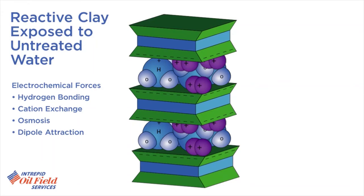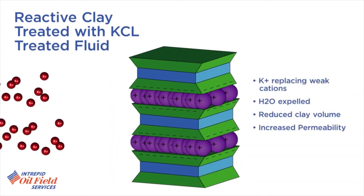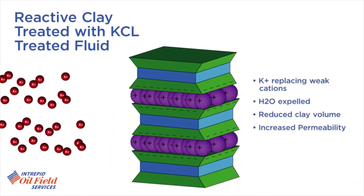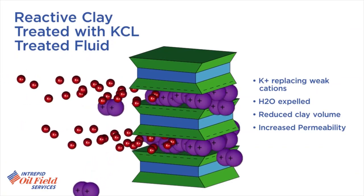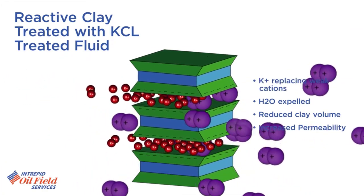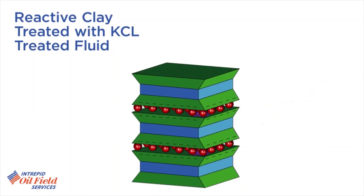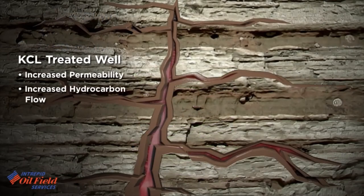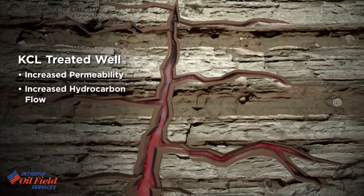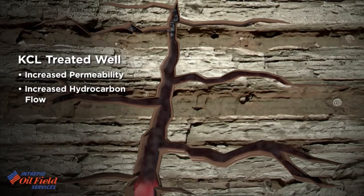When smectite plates are exposed to a KCL brine, the bonds from the initial water molecules already attached are broken. The K+ ions attach to the negatively charged clay surfaces, pull the platelets together, and in the process expel the water and shrink the clay. This shrinking increases permeability in the reservoir and ultimately improves IPs and flattens out decline curves, producing more robust wells.